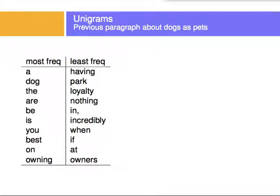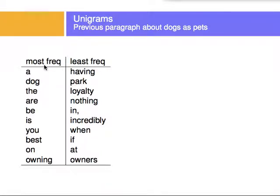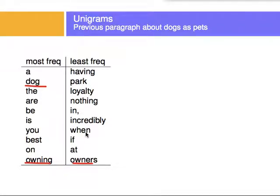If I just decide to split the words on spaces — considering a word as anything between spaces — then for the example 'No wonder dogs are called man's best friend,' the most frequent words of this small text might give me one or two words that are somewhat telling. Of the least frequent words, because it is such a small set of text, you see a few other words that might tell you a little about the text, but not so much. Most frequencies are ones or twos, so there's not much difference between the most and least frequent. But you can see that unigrams will give you this information.